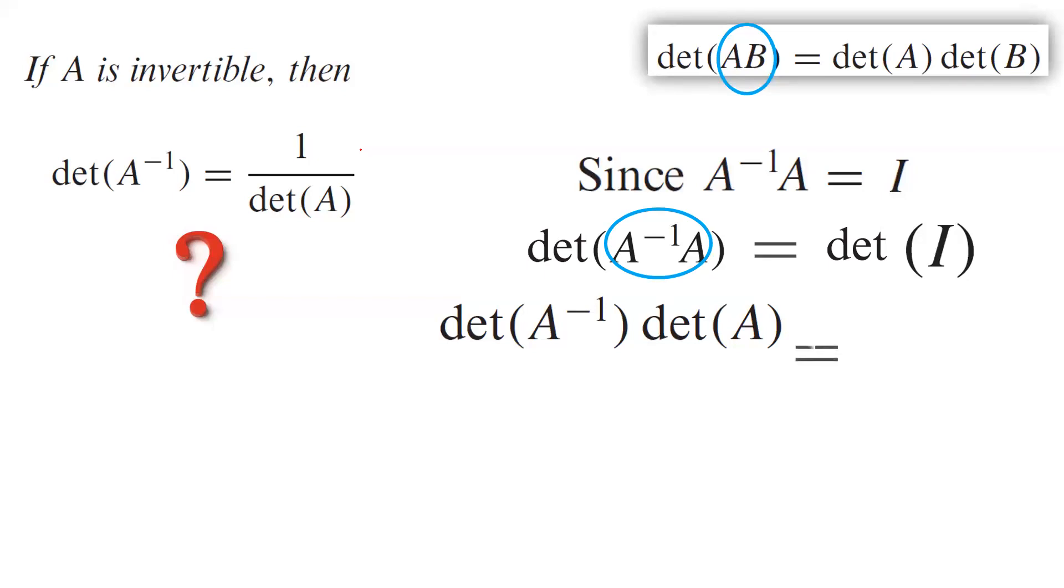On the right-hand side, you end up with the determinant of the identity matrix, which is 1. Now divide everything by determinant of A and cancel out the determinant of A, which is a common factor.